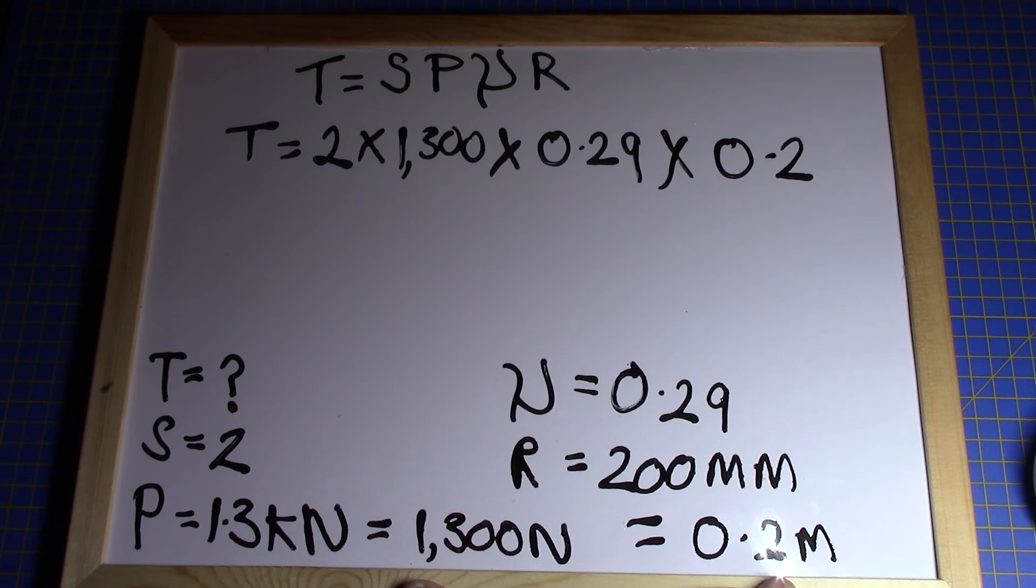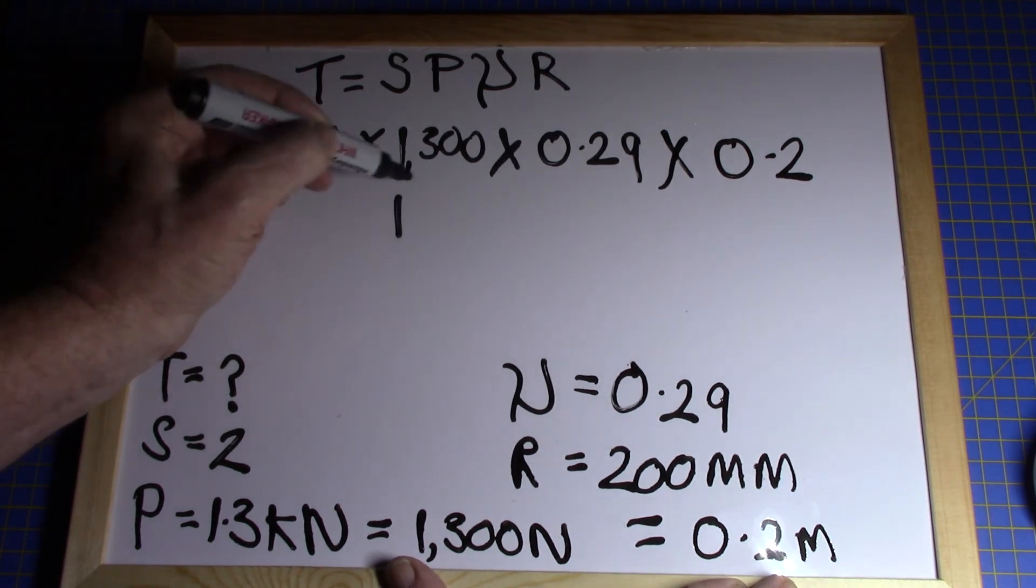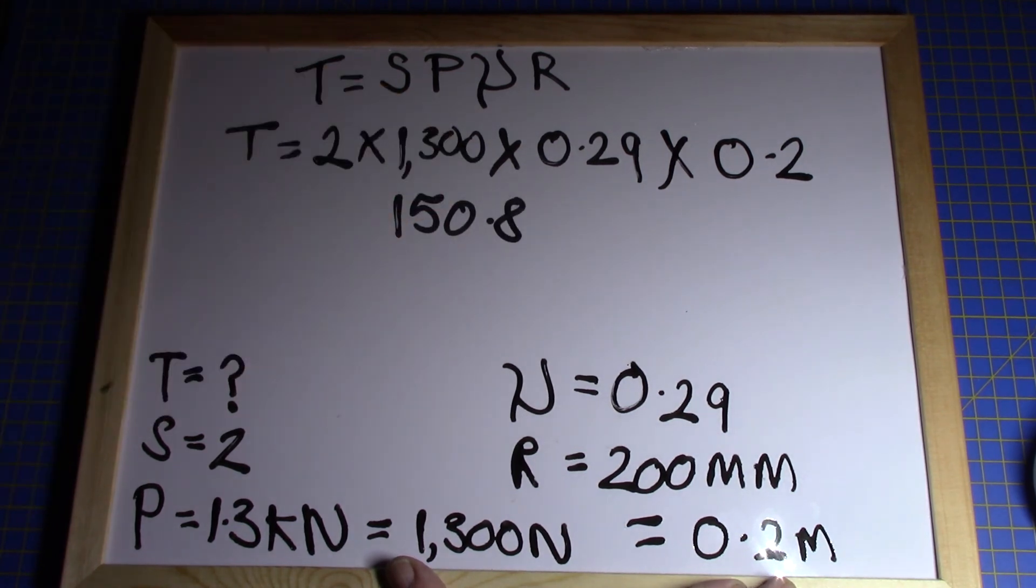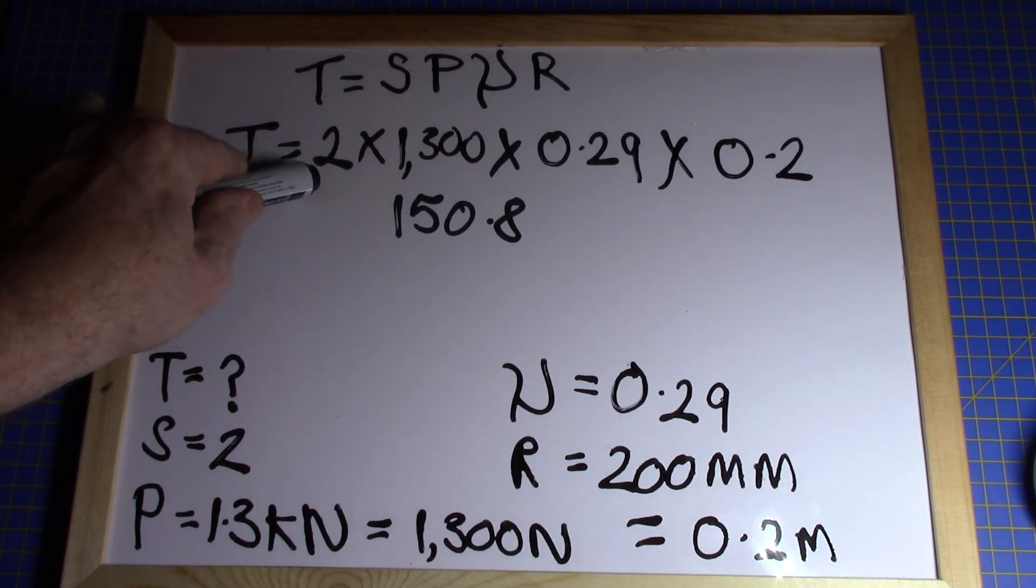Just let the calculator worry about all those oddball figures. Put them in: 2 multiplied by 1300 multiplied by 0.29 multiplied by 0.2. When we do that, we get an answer of 150.8.